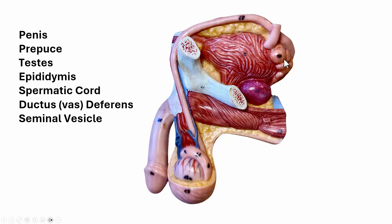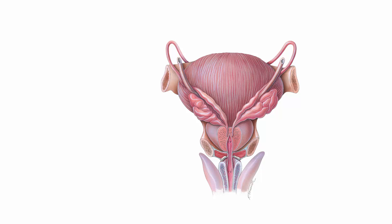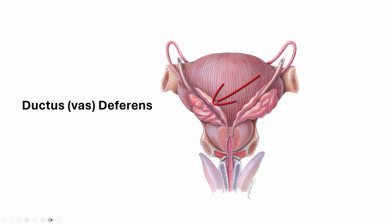Now if we could take this model and turn it around to look at the back, this is what it would look like. Again we have the ductus deferens or vas deferens, which widens out into the ampulla. Then we have our seminal vesicles.